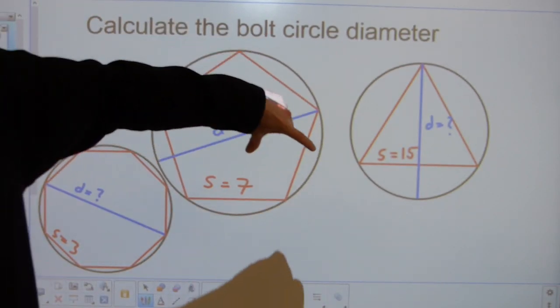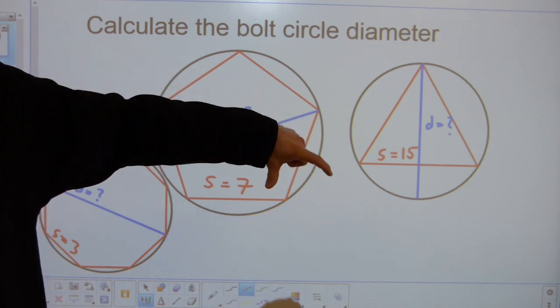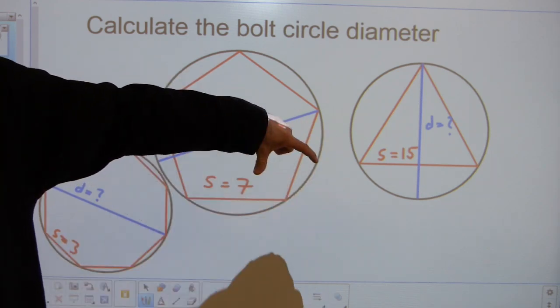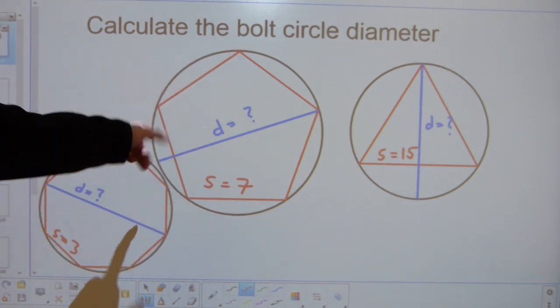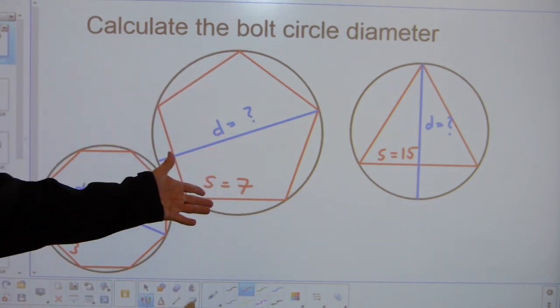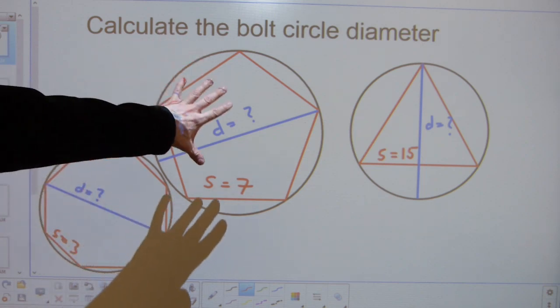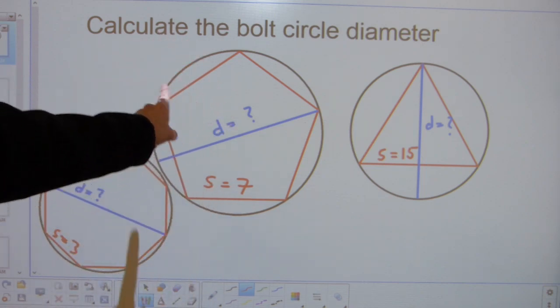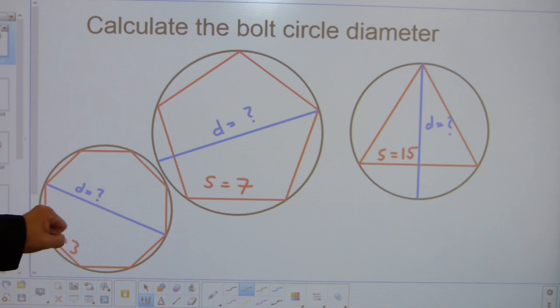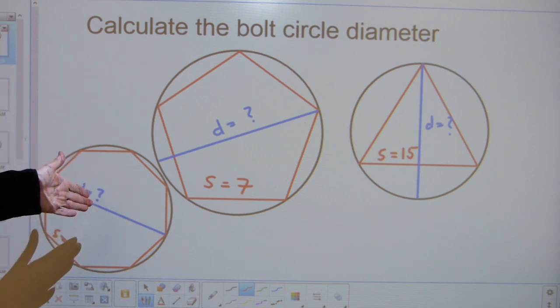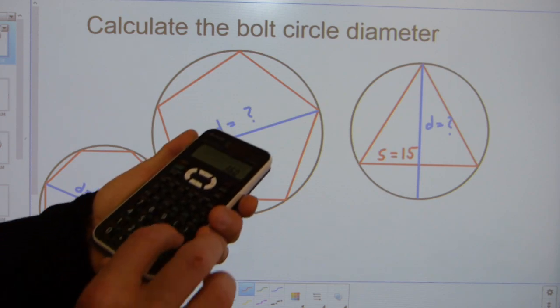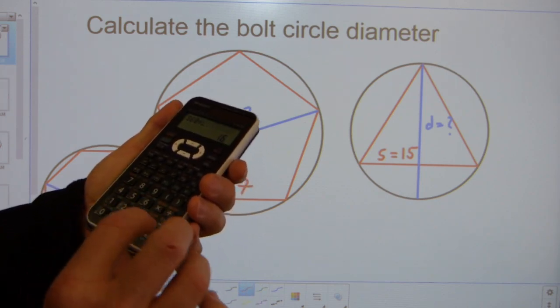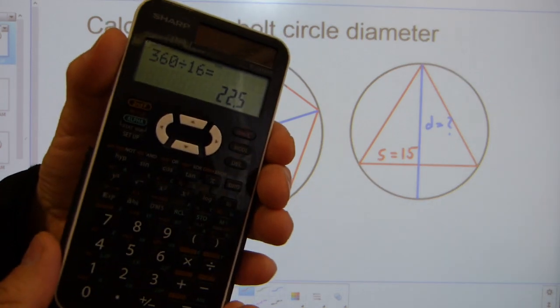Here you would take the bolt distance divided by sine 45 to get your pitch circle diameter. If you have five, it's whatever bolt hole divided by sine 36, because 360 divided by 10 - five corners times two, 10 is 36. If you have eight bolt holes, you're going to be dividing the circle into 16 parts. So 360 divided by 16 is 22 and a half.